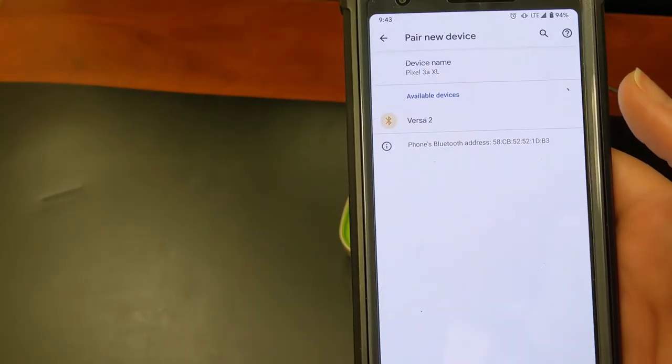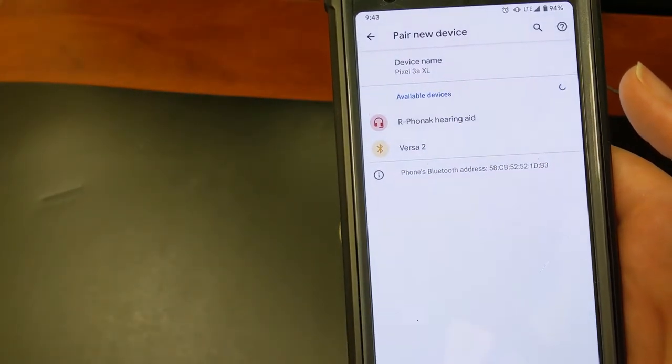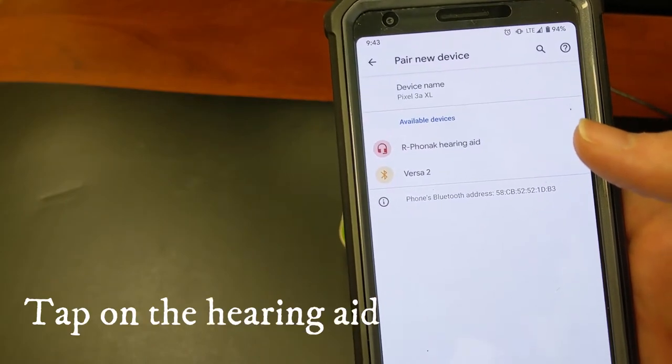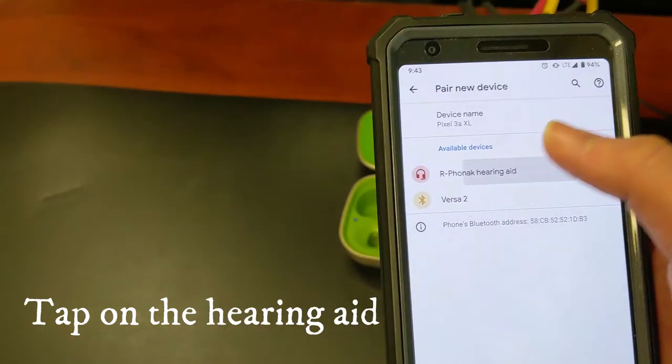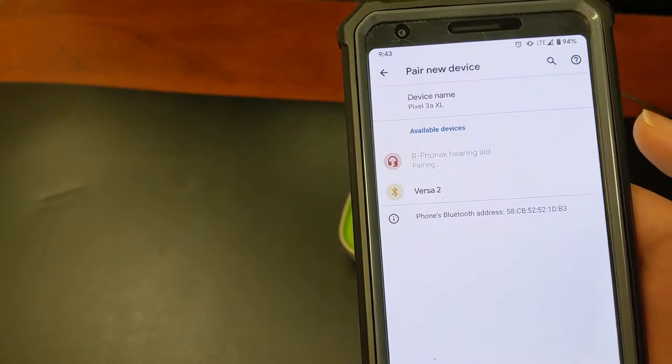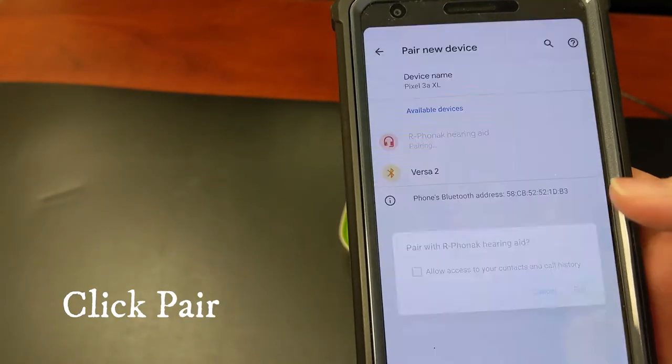We should see one of the hearing aids showing up on the screen. I see the right one. I'm going to tap on that and in just a second it's going to ask me to pair and I'll click pair.